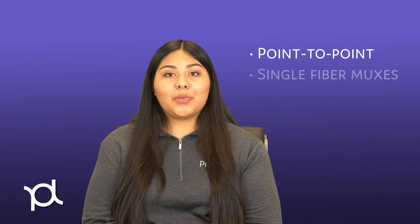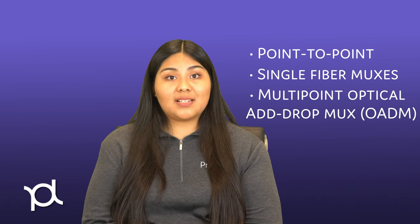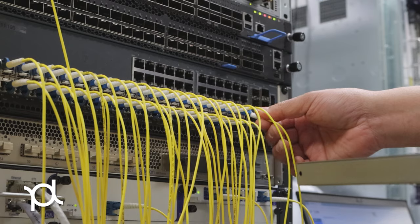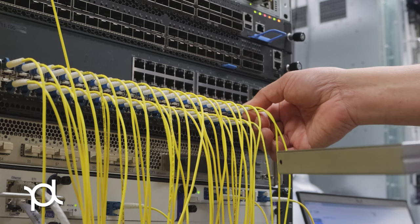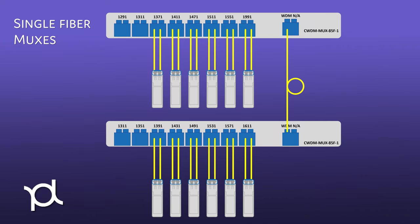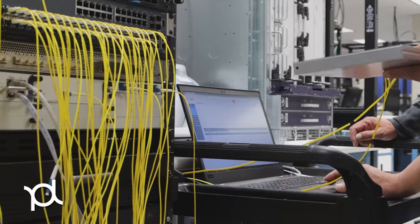There are three typical types of WDM applications that allow for multiplexers and demultiplexers: point-to-point, single fiber MUX, and multipoint optical add-drop MUX. A point-to-point application can combine four or more channels onto a single fiber pair, with multiplexers and demultiplexers at the end of each connection. Similarly, a single fiber multiplexer is also used for point-to-point applications, but they can connect standard duplex transceivers over a single fiber.